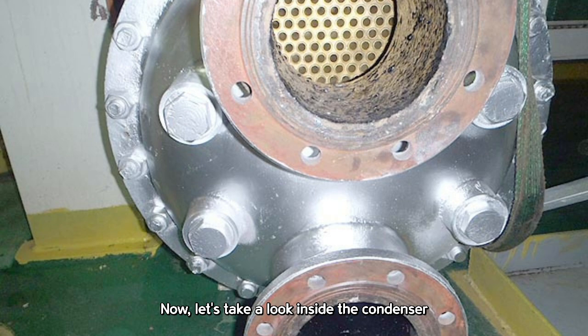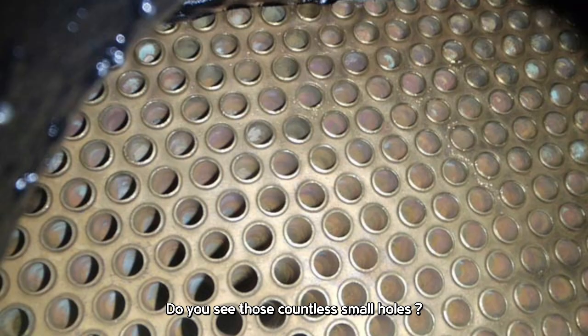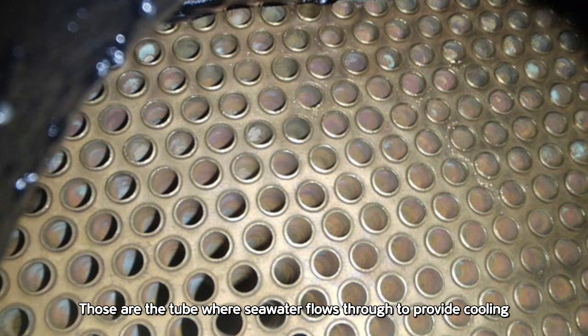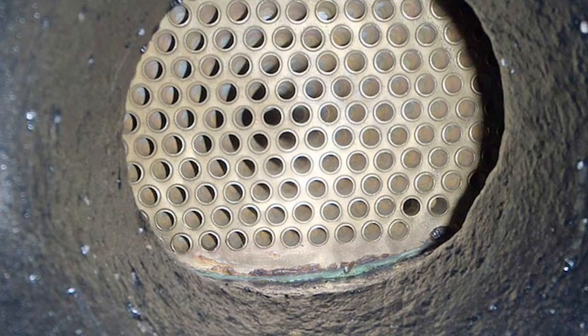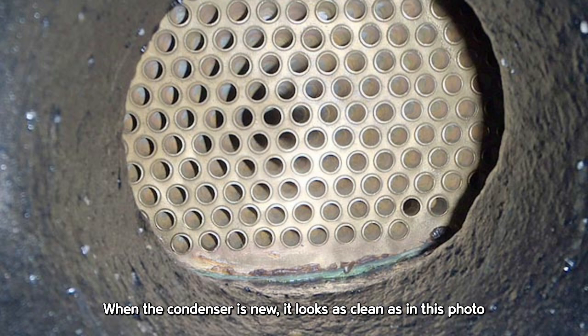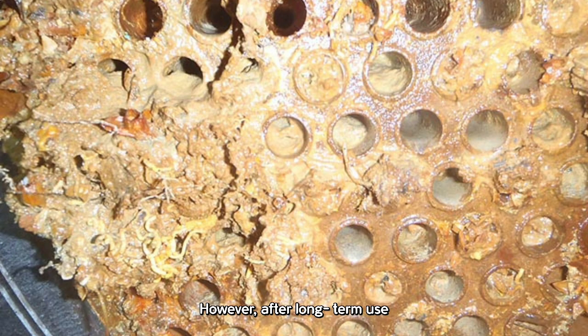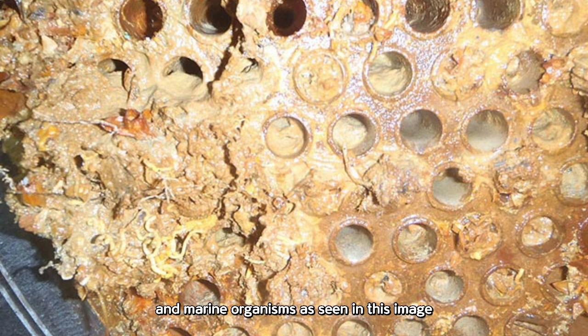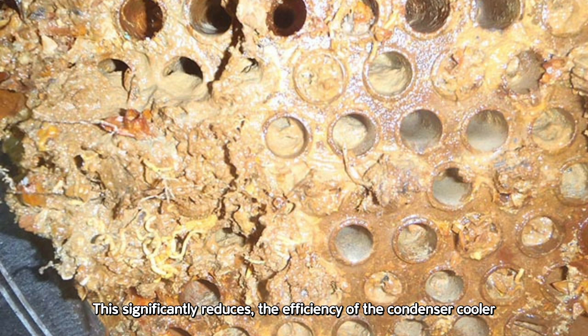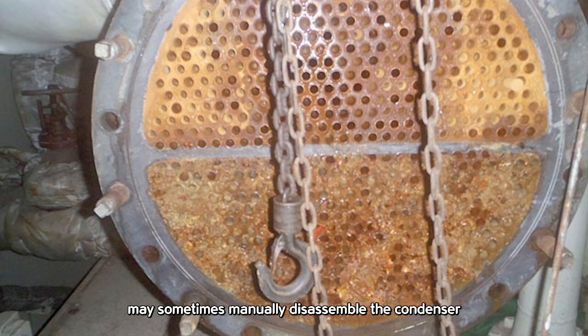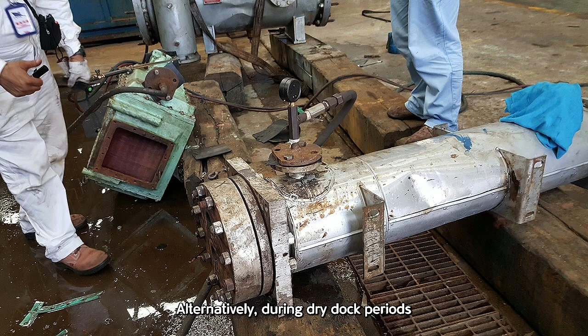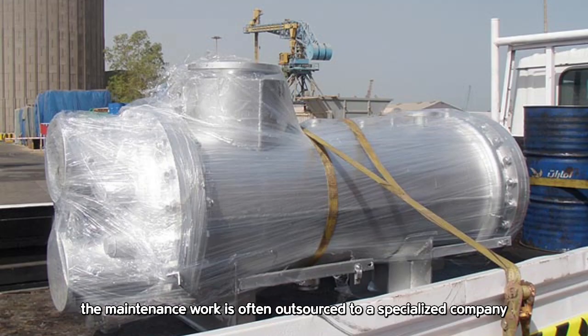Now, let's take a look inside the condenser. Do you see those countless small holes? Those are the tubes where seawater flows through to provide cooling. As the cooling seawater passes through these tubes, it cools the high-temperature steam flowing around the outside of the tubes. When the condenser is new, it looks as clean as in this photo. However, after long-term use, many of the tubes can become clogged with mud and marine organisms. This significantly reduces the efficiency of the condenser cooler. In such cases, ship crew members may sometimes manually disassemble the condenser and clean the clogged tubes themselves. Alternatively, during dry dock periods, the maintenance work is often outsourced to a specialized company for thorough overhaul.